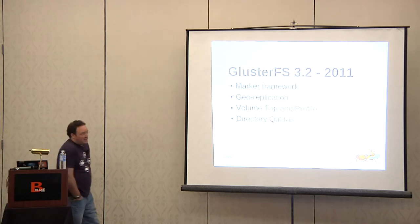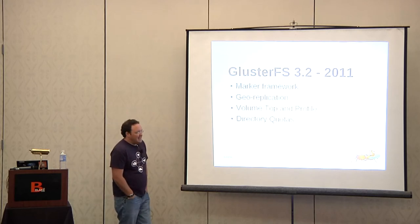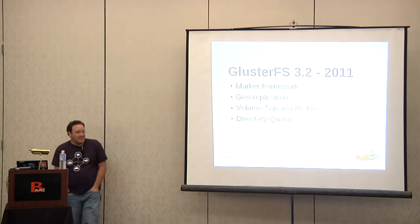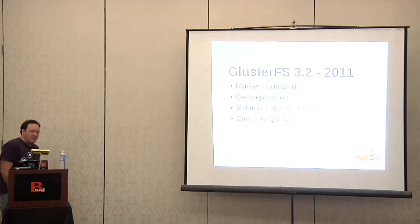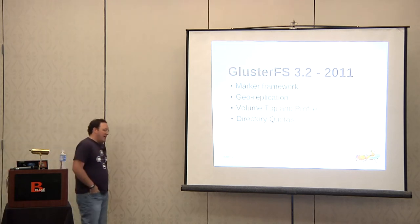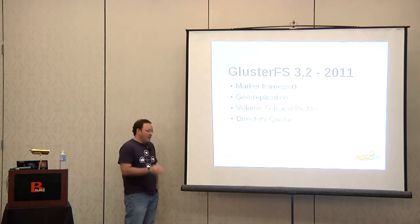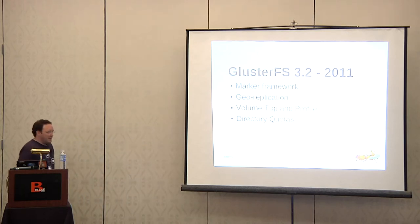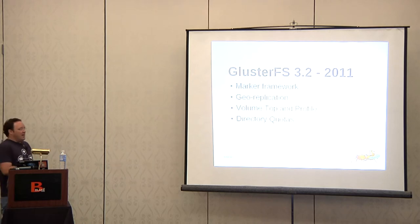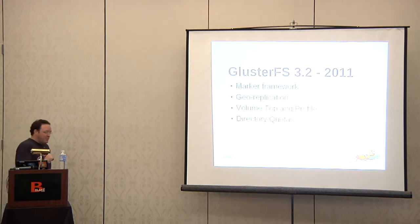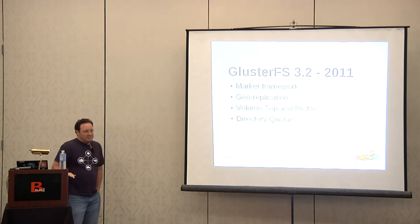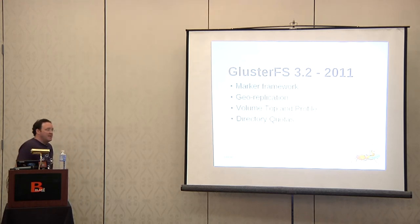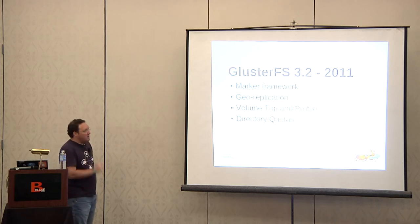In 3.2, Gluster introduced geo-replication — it's async. That's getting dramatically better with 3.3, but 3.2 geo-replication did come in. That meant if you changed five terabytes in one day, you'd have a huge five-terabyte change to replicate rather than 10 megabytes at a time. You were effectively doing point-in-time replication. They did that simply because replicating in real time across a WAN just does not work readily. That's getting more granular in 3.3.